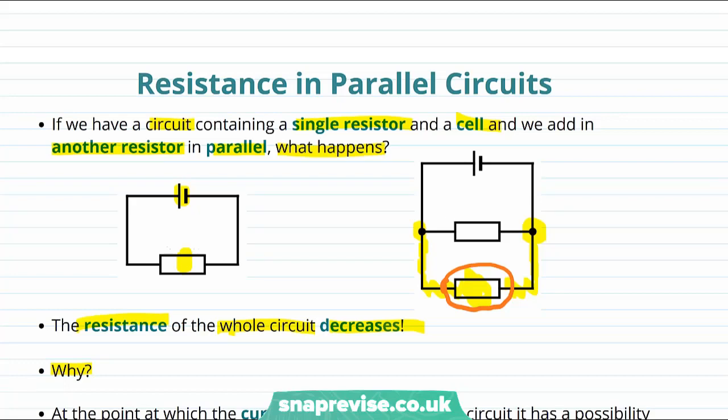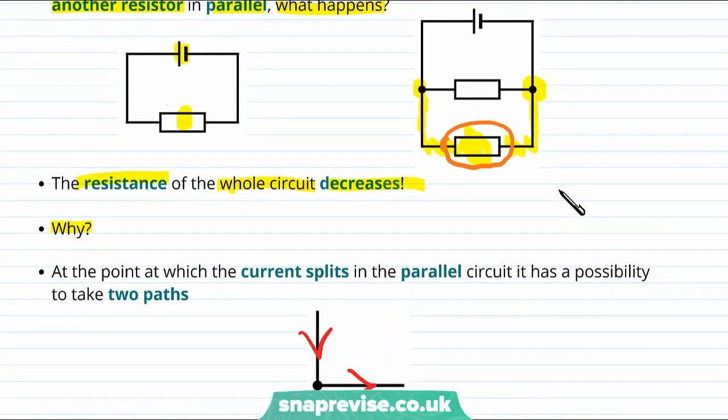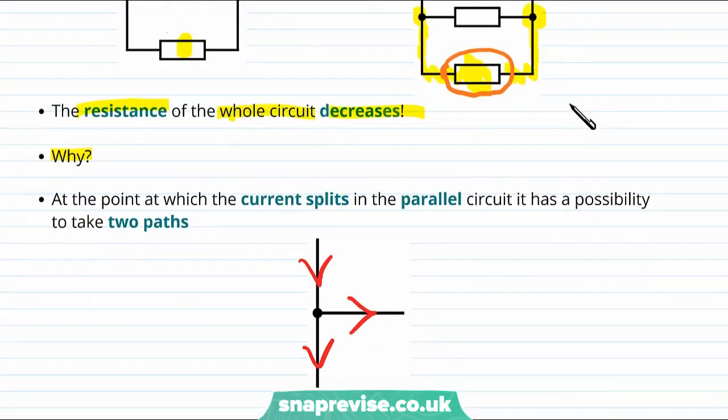We can summarize this point by saying that the reason the resistance of the whole circuit has decreased is that at the point at which the current splits in the parallel circuit, the current actually has a possibility of taking two paths.